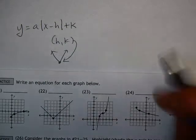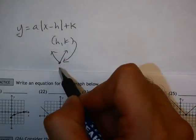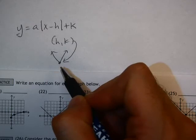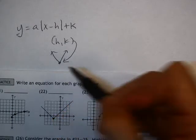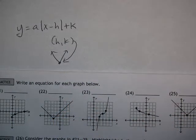The a value is if the vertex, or if the v shape in this absolute value gets wider or skinnier or flips upside down, one of those things happening. So we'll see if that happens on these next few.